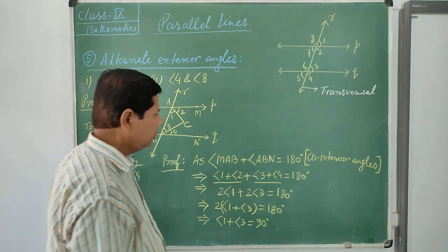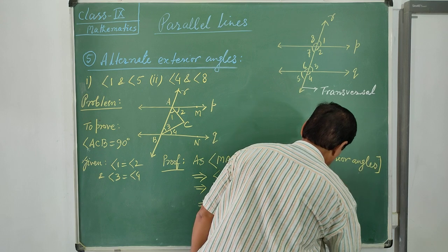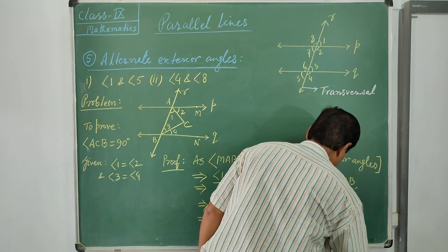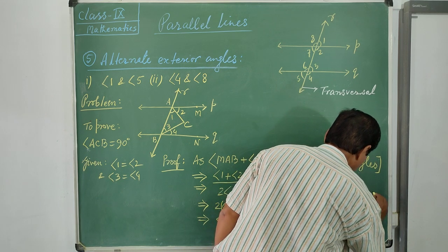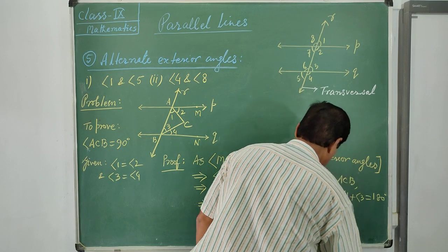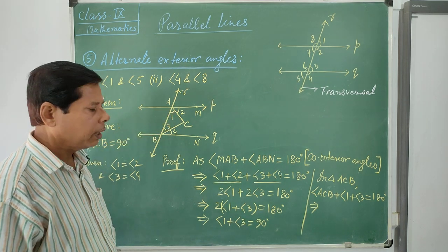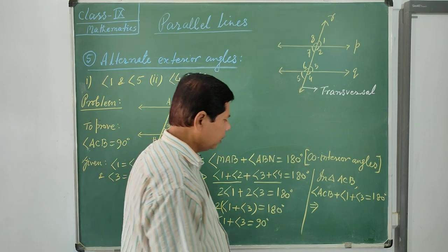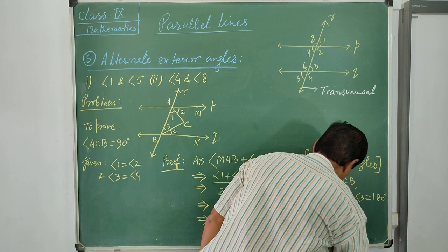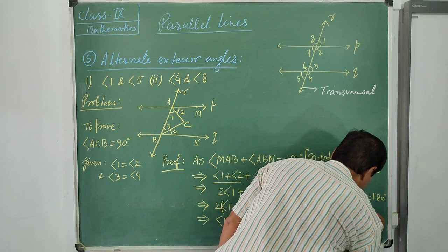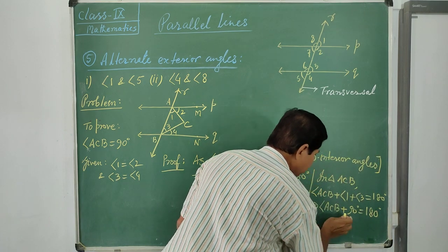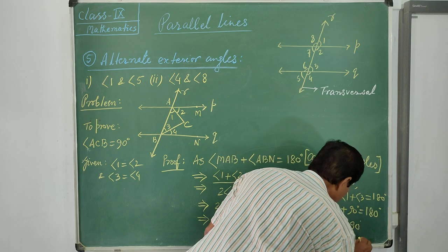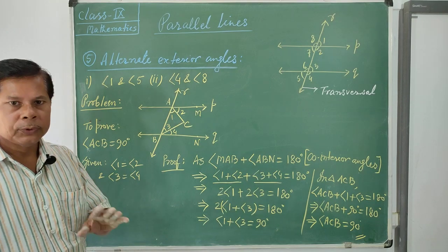Now consider triangle ACB. The sum of its interior angles equals 180°, so angle ACB + angle 1 + angle 3 = 180°. Substituting angle 1 + angle 3 = 90°, we get angle ACB + 90° = 180°, therefore angle ACB = 90°. This completes the proof that the bisectors of co-interior angles of parallel lines meet at a right angle. Thank you.